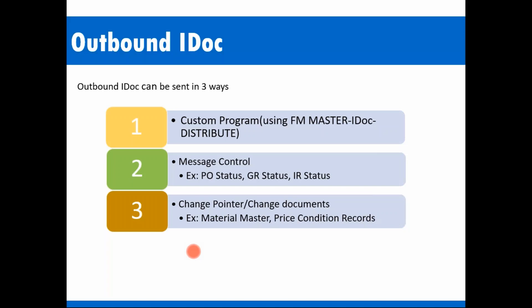With change pointers, whenever a material is created or changed — for example, a material is created and then the purchase group is changed — the system will automatically generate an IDoc. We don't run this manually every time; we run a batch job once every one or two hours. Based on the batch job, the system collects all newly created or changed materials, creates an IDoc, and sends it to the middleware, which converts it to the required format and sends it to the third-party system.